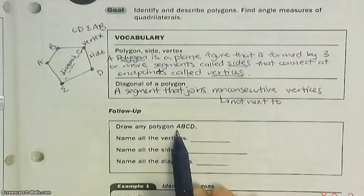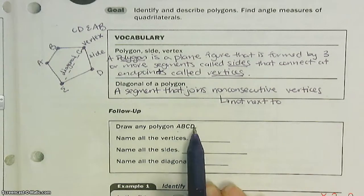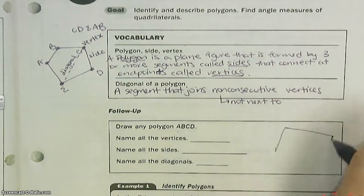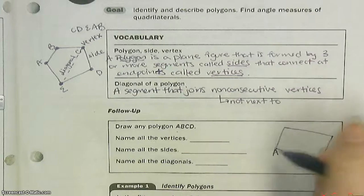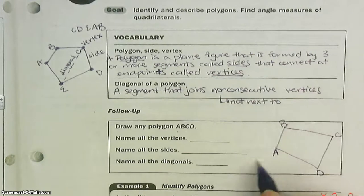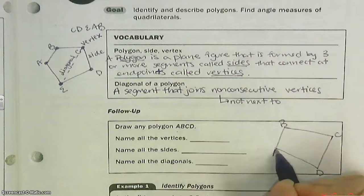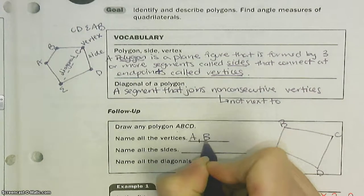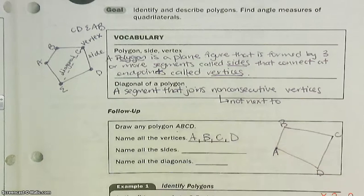Here they want us to draw a four-sided shape: one, two, three, four. So it can look like whatever we want. A, B, C, D—remember when we name it, we've got to go all the way around the same direction. Name all the vertices. The vertices are just these points, these endpoints. So A is one, B is one, C is one, D is one.